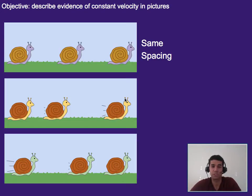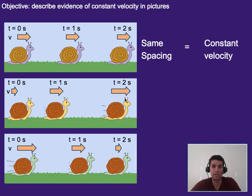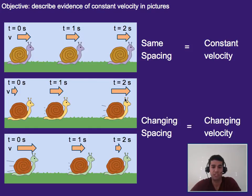To recap: same spacing, if we're taking multiple snapshots, means constant velocity. If we have a changing spacing, whether increasing or decreasing, we have a changing velocity. We'll talk more about that in the next unit when we discuss acceleration.